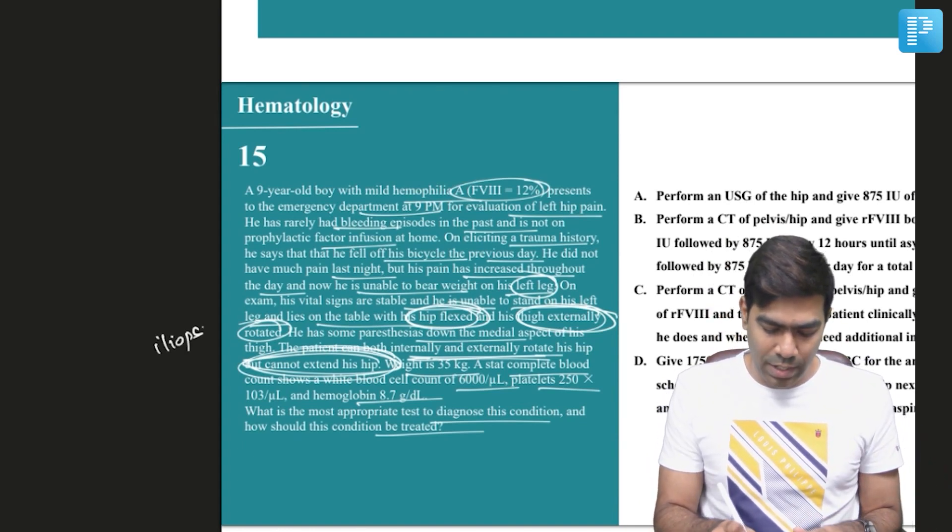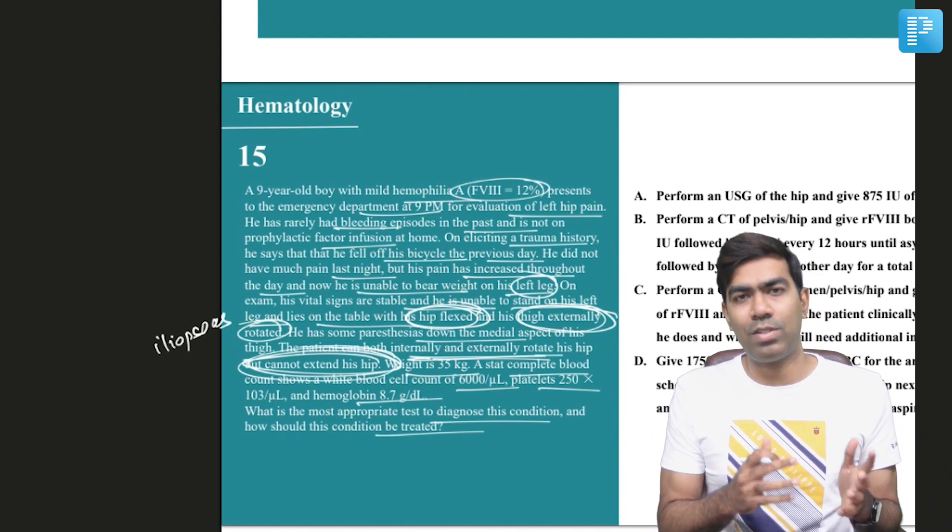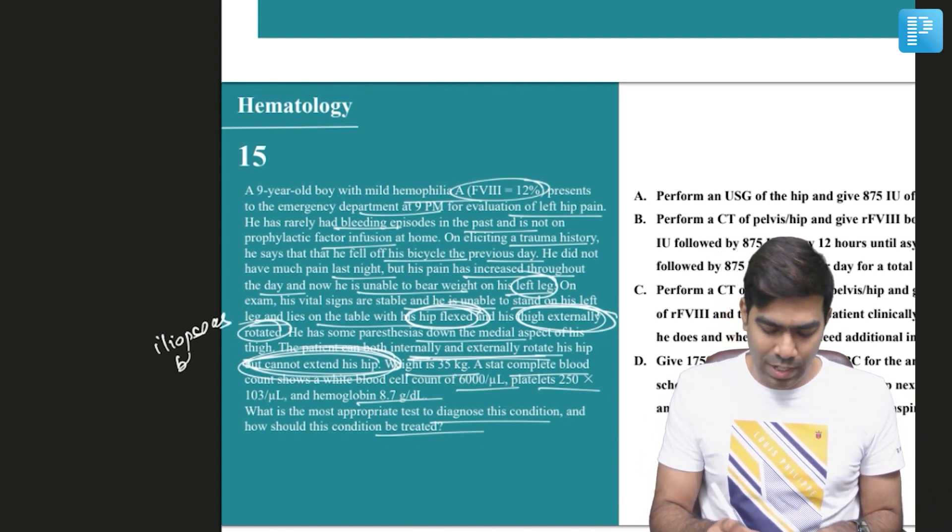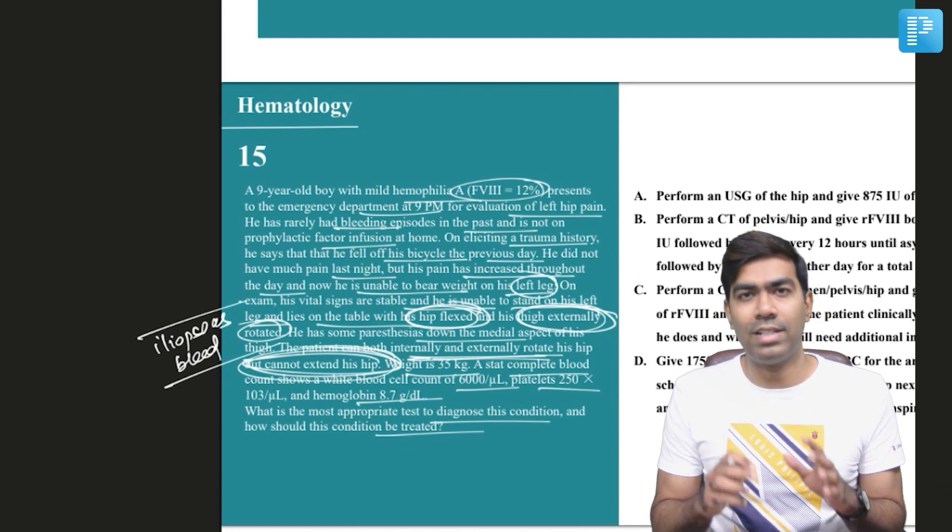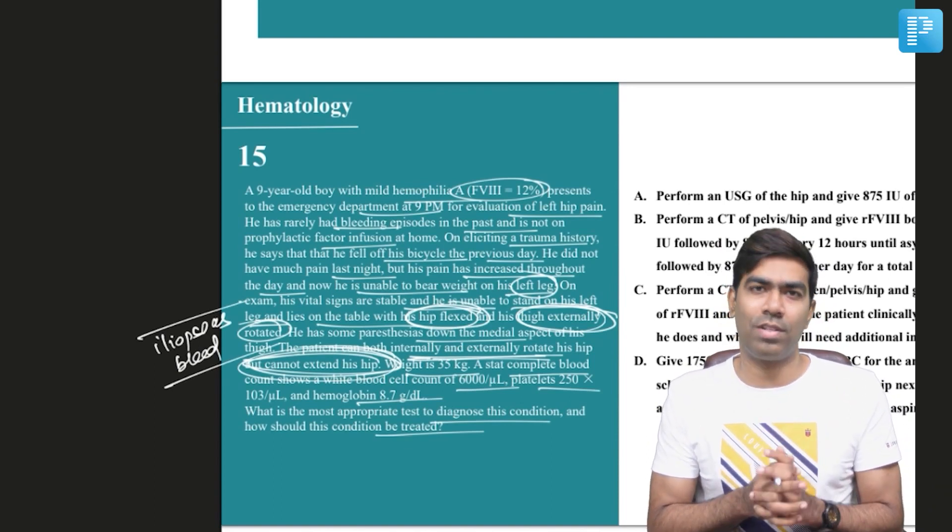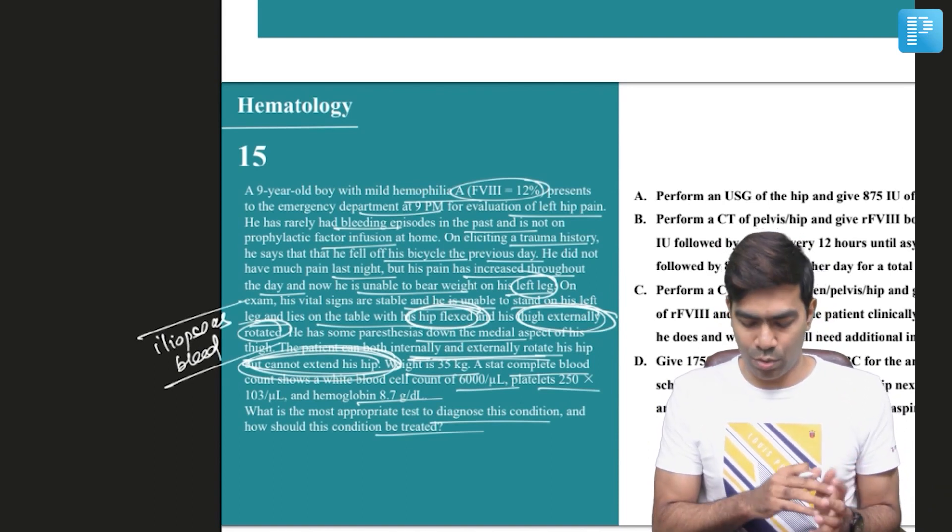This is classic for iliopsoas bleed. In patients who are having sepsis you can think about iliopsoas abscess also but nevertheless, this is an iliopsoas problem. It's an iliopsoas bleed, it's a hematoma, it's an emergency even more than hemarthrosis.